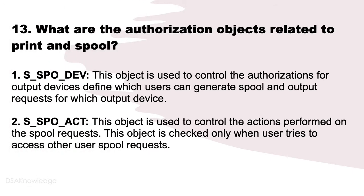What are the authorization objects related to print and spool? Number 1: S_SPO_DEV. This object is used to control the authorizations for output devices, defining which users can generate spool and output requests for which output device. Number 2: S_SPO_ACT. This object is used to control the actions performed on spool requests. This object is checked only when a user tries to access other users' spool requests.